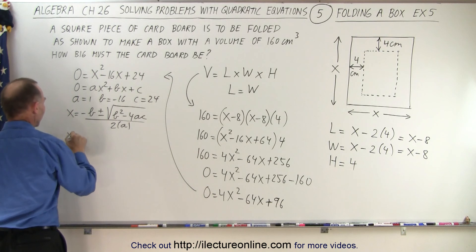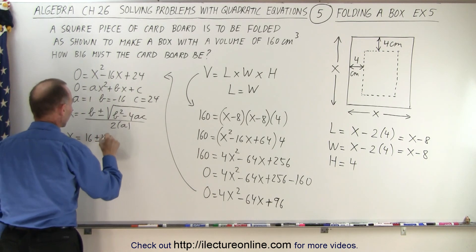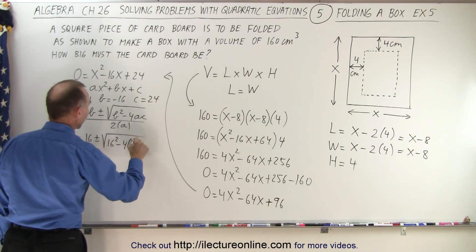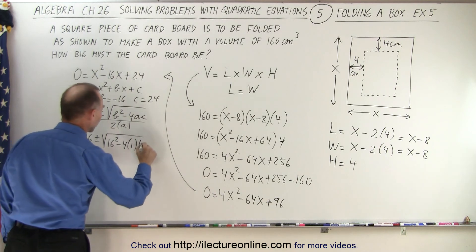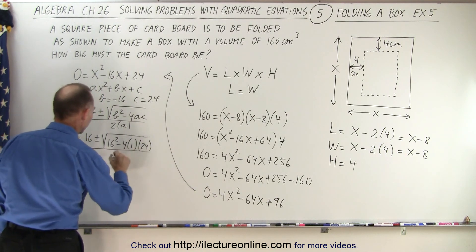So in this case we have x is equal to minus b, that's a minus times a minus 16, that's 16, plus or minus the square root of 16 squared minus 4 times a times c which is 24, all divided by 2, which is 2.